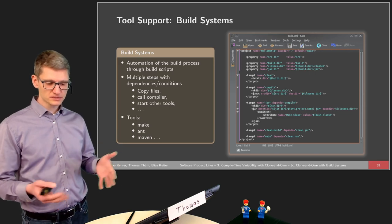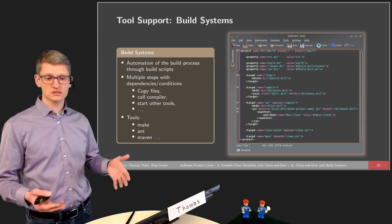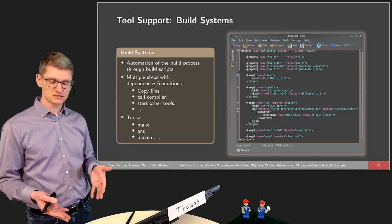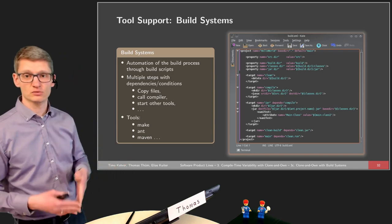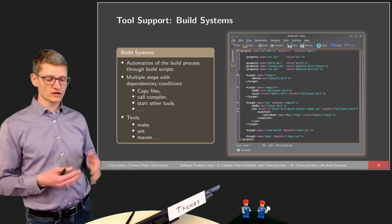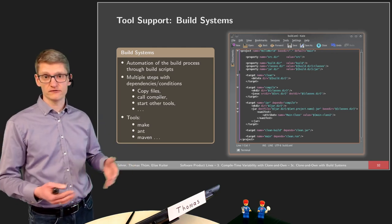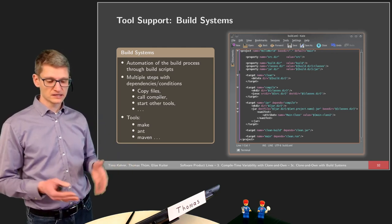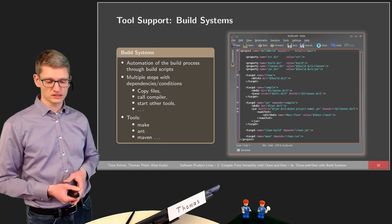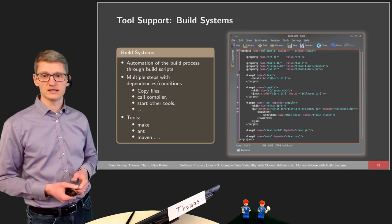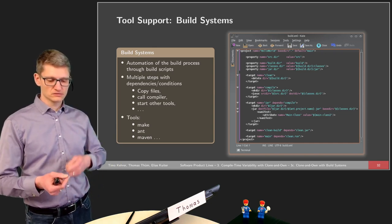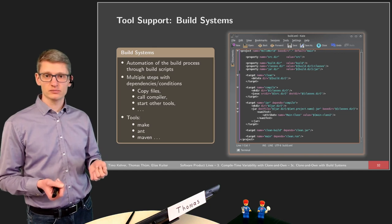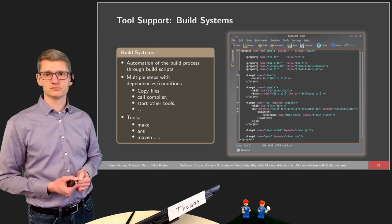There are multiple steps involved in system building: dependencies, conditions, copying files, calling compilers, starting other tools, and configuring compilers. There are many tools out there that can do the job, like Make, Ant, or Maven. These tools support developers in automating the build process.